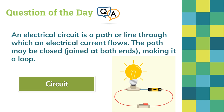The path may be closed — joined at both ends — making it a loop. As you can see right here in the picture, let's say we begin on the right side of the battery. Electricity comes out of the battery, and then we use this switch to open and close the circuit. For electricity to flow, the circuit should be closed. In this case the circuit is closed, and that way we can turn on the light.